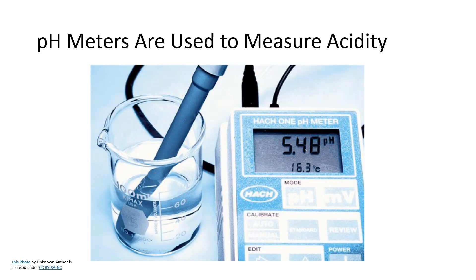pH meters are used to measure acidity. A pH meter is an electronic device with a probe that can be inserted into a solution of unknown pH. The probe contains an acidic aqueous solution enclosed by a special glass membrane that permits migration of H+ ions. An electric potential results if the unknown solution has a different pH from the solution in the probe, and this electric potential is converted to a digital readout displayed as the pH.